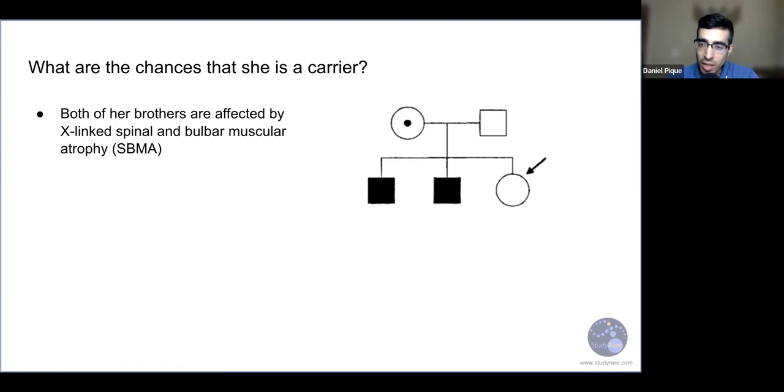Okay, so hopefully you've had a second to think about this. And the answer in this case would be 50%. So we know that her mother is an obligate carrier. Her mother's indicated here. And therefore, because she is a carrier, her daughter also has a 50% chance of being a carrier, as well as a 50% chance of being a non-carrier. And because this is an X-linked disorder, we wouldn't expect the individual who's a woman in this case to be affected.